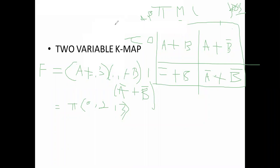Remember one thing only: if 0 is there, uncomplimented form; if 1 is there, complemented form. Now draw the K-map for two variables because here two variables are there.